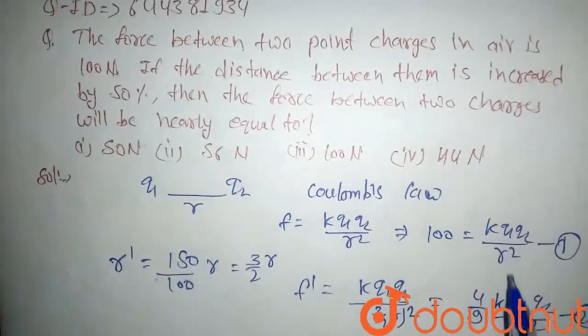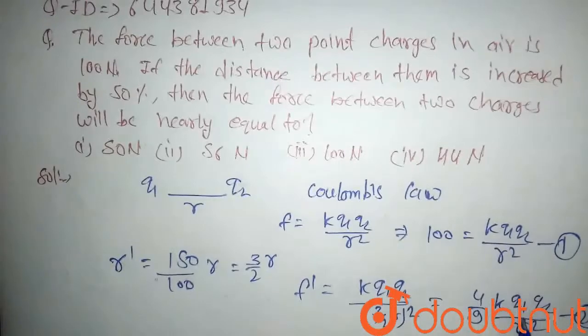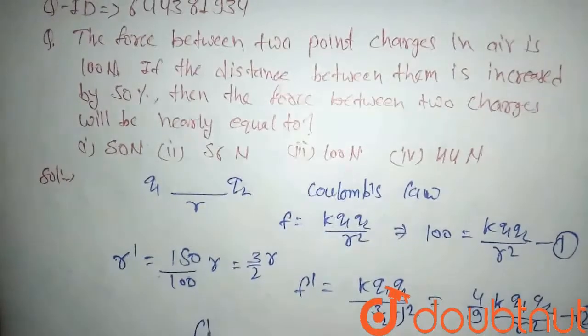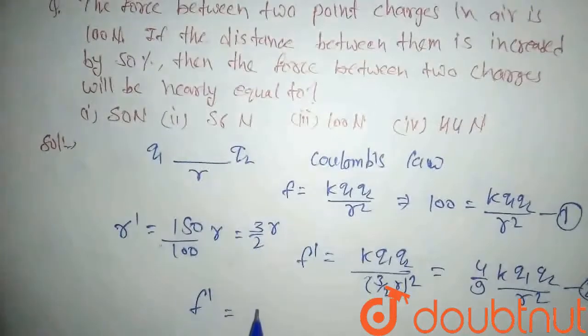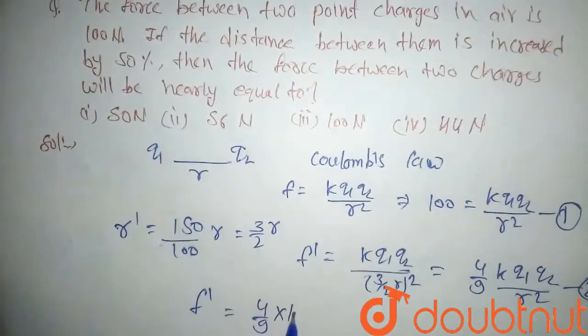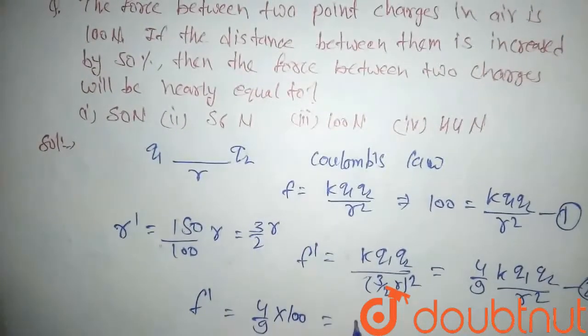By equation first and second, if we put this value here, we will get F dash equal to 4 upon 9 into 100. So if we solve, we will get 44.44 Newton, which will be our new force.